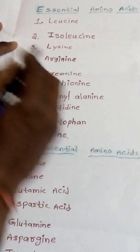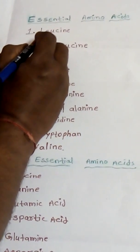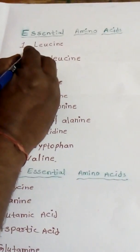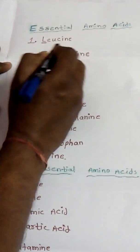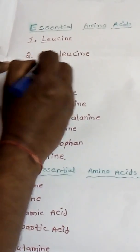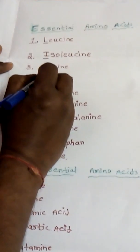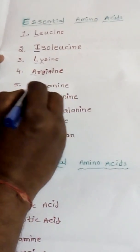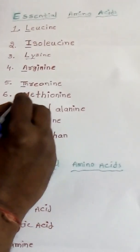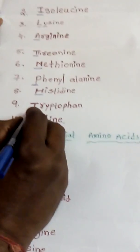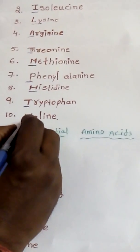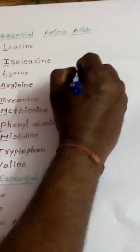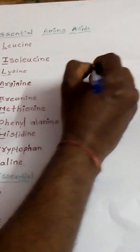We can remember them like this. In leucine we take L, in isoleucine we take I, in lysine we take Li, in arginine we take A, in threonine we take T, in methionine we take M, in phenylalanine P, in histidine H, in tryptophan T, and in valine V.